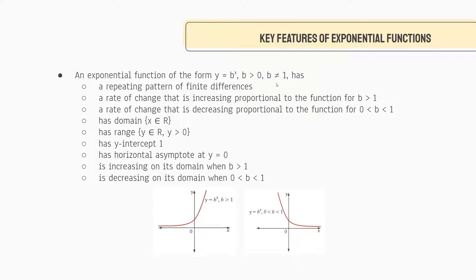An exponential function's rate of change is increasing proportionate to the function for b greater than 1, and its rate of change is decreasing proportionally to the function for 0 less than b less than 1. Essentially, if you have a graph where b is greater than 1, its rate of change is going to be proportional to that graph. The same thing goes for the other graph — it'll be proportionately decreasing.